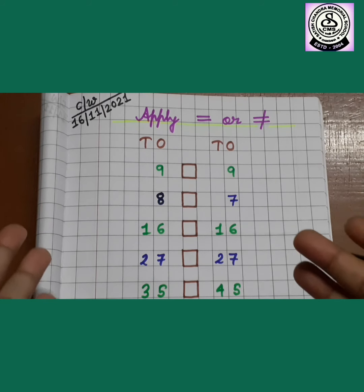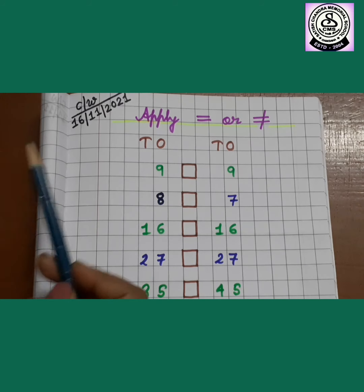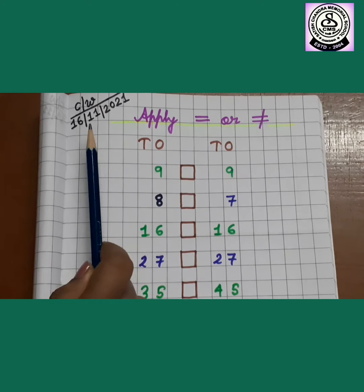In our class work students, you can see we have CW date. Please write it down. And now let us read the heading. A, P, P, L, Y, apply, equal to or not equal to. As we have learned equal numbers, same numbers means equal to, and if we do not have same numbers in both the side that means not equal to.